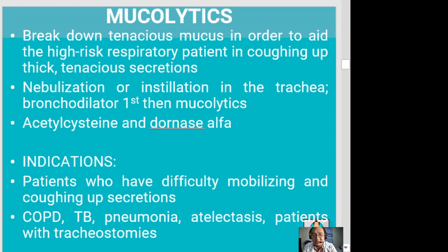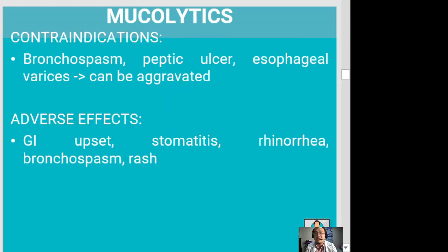Indications for mucolytics include patients who have difficulty mobilizing and coughing up secretions due to tenacious mucus. They are also used for COPD, tuberculosis, pneumonia, atelectasis or lung collapse, and patients with tracheostomies. Contraindications include bronchospasm, peptic ulcers, and esophageal varices, as these conditions may be aggravated. Adverse effects include GI upset, stomatitis, rhinorrhea, bronchospasm, and rashes.